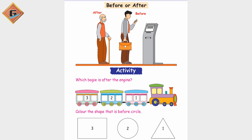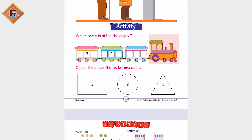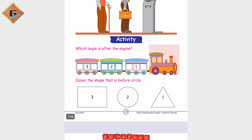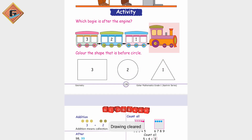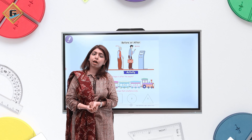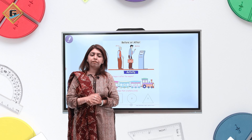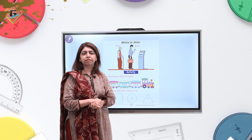This is far — so F for far. This is near and this is far from the house. Now before and after — this comes before, this is after. Which boogie is after the engine? This boogie. Color the shape that is before the circle — you will color this rectangle. That was our video lesson for today. I hope you liked the video lesson. We will meet again with a new video lesson. Until then, Allah Hafiz.